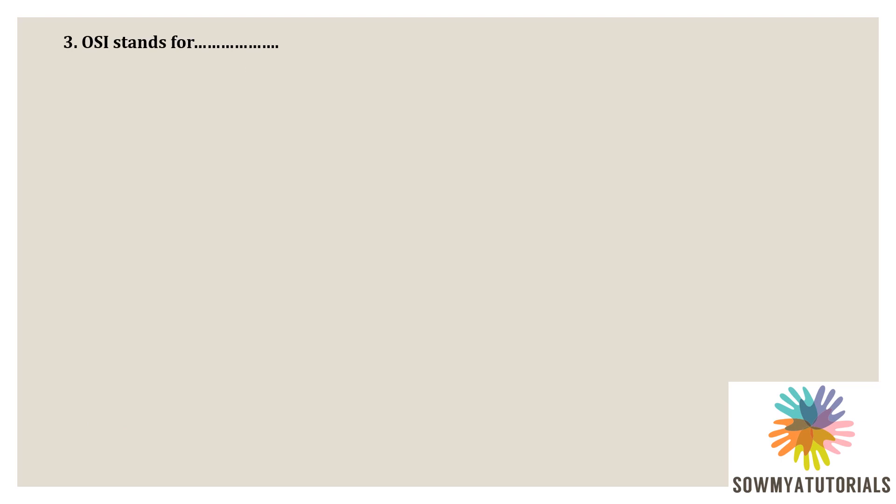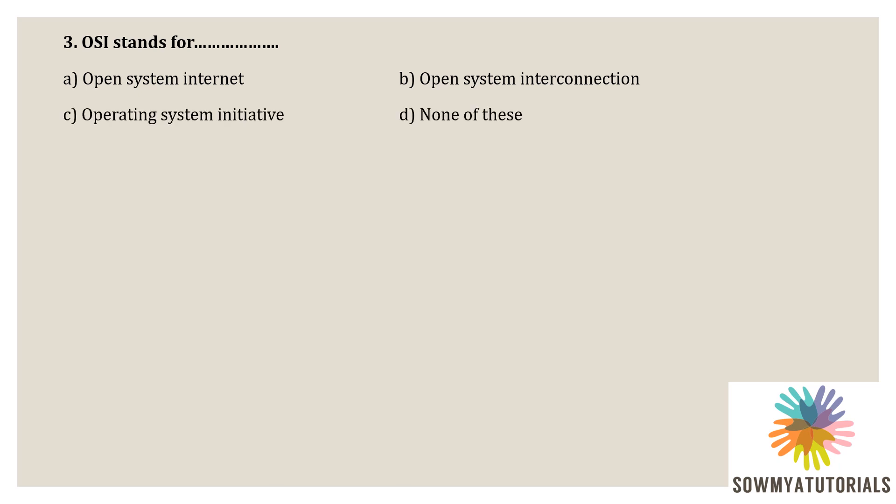Next question: OSI stands for dash. Options are option A - open system internet, option B - open system interconnection, option C - operating system initiative, option D - none of these. The correct option is option B, open system interconnection. OSI stands for open system interconnection. It has been developed by ISO, that means international organization for standardization, in the year 1984. It is the seven layer architecture, with each layer having a specific functionality to perform.